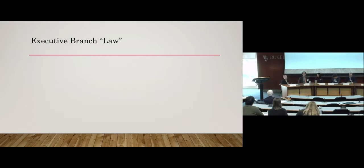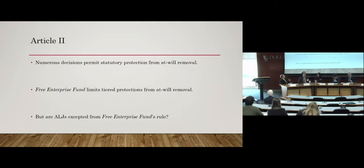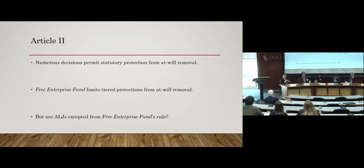The dissenters, led by Justice Breyer, asked about all the other executive officials with tiered protection from at-will removal. The one most relevant here was administrative law judges. ALJs have protection from at-will removal — they can only be removed by the Merit Systems Protection Board, whose members can only be removed by the president for good cause. So between the president and ALJs, we have two tiers of protection from at-will removal.